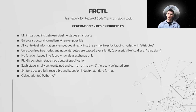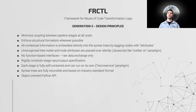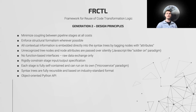For example, specifying byte alignment of data primitives is achieved by tagging their syntactical elements in the tree with an alignment attribute, instead of configuring an entire stage or pipeline to generate specific alignments. Unrecognized syntactical elements or attributes are passed over silently in order to minimize interstage incompatibilities.